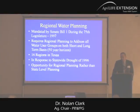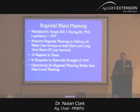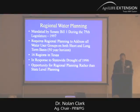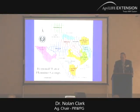There are 16 regions of Texas — I'll show a map in just a minute. Primarily, this was done in response to the drought of 1996, and it offered an opportunity for more structured regional water planning.